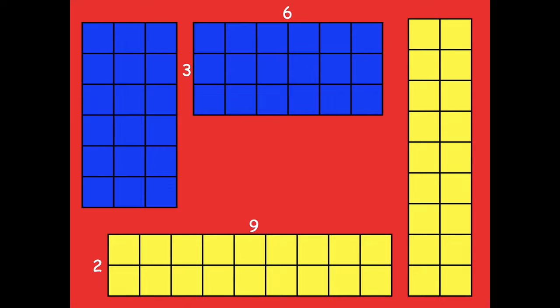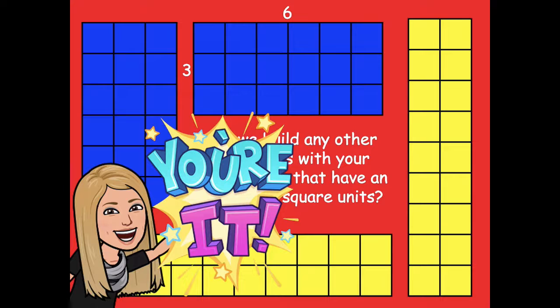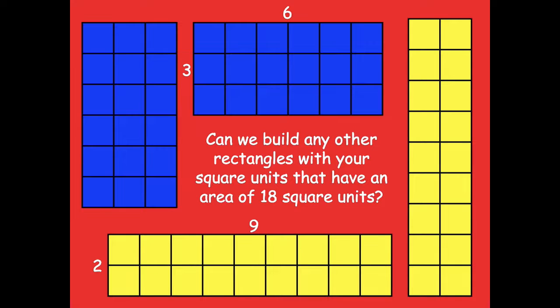Can we build any other rectangles with square units that have an area of 18 square units? To be sure, we have to count the factors. We can list all pairs of factors that make 18 when multiplied, then check that we have a rectangle for each pair of factors.